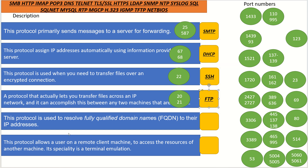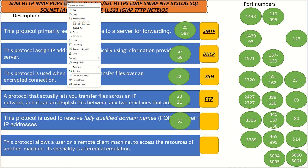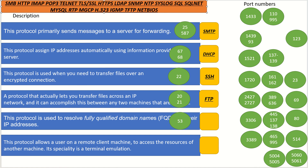This protocol is used to resolve fully qualified domain names to their IP addresses — that's the easy one. That's the Domain Name System, which uses port 53. It can also use both TCP and UDP. Domain Name System — it is right over here.